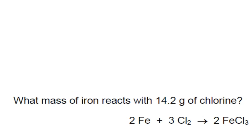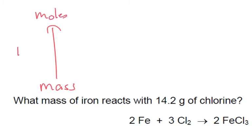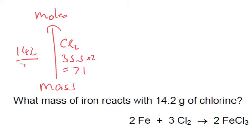What mass of iron reacts with 14.2 grams of chlorine? Starting off, as always, mass going to moles. We've got 14.2 grams of chlorine. Chlorine is Cl₂ — 35.5 times 2 — giving a molar mass of 71. So 14.2 divided by 71 gives us 0.2 moles.